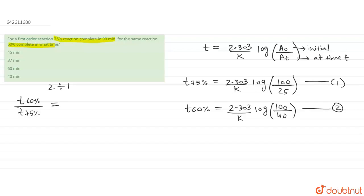The common factor will cancel out, so log 100 upon 25 in the numerator, and similarly in denominator log 100 upon 40, because this is the common factor which will cancel out.